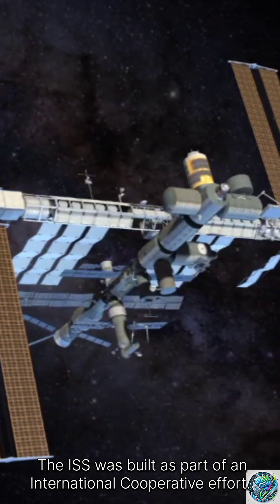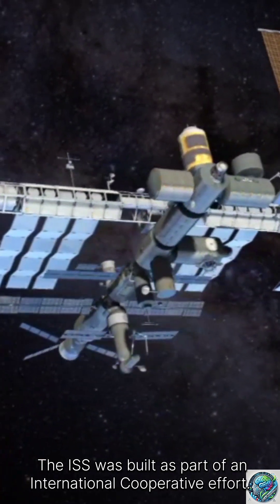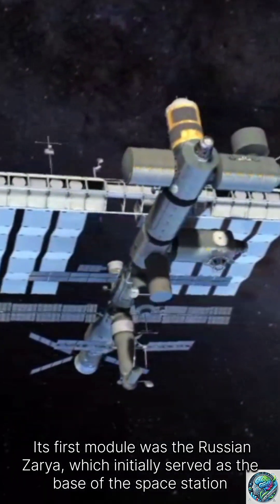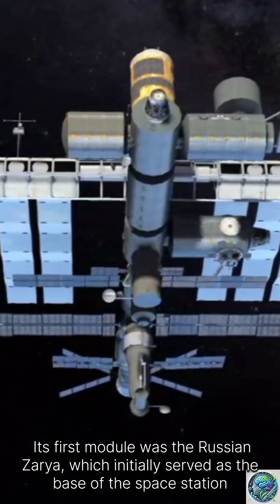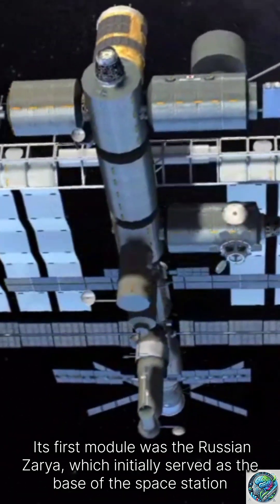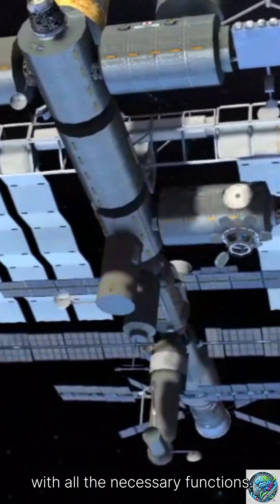The ISS was built as part of an international cooperative effort. Its first module was the Russian Zarya, which initially served as the base of the space station with all the necessary functions.